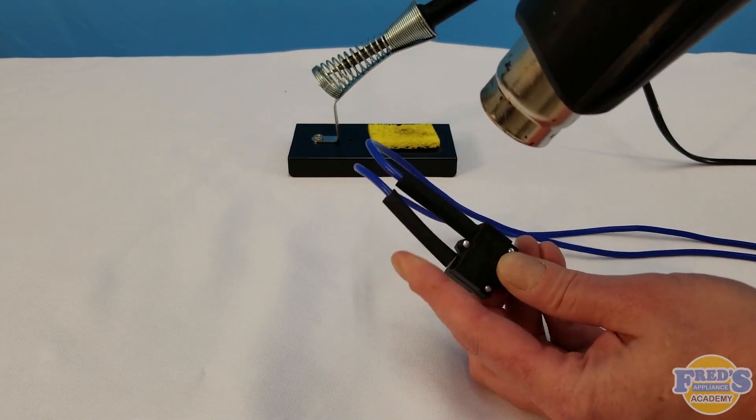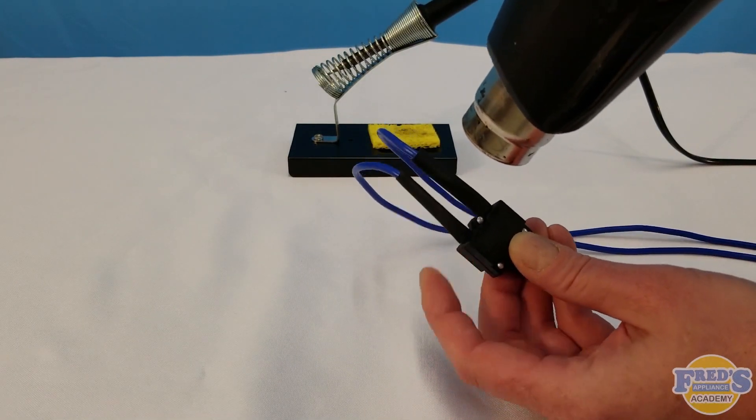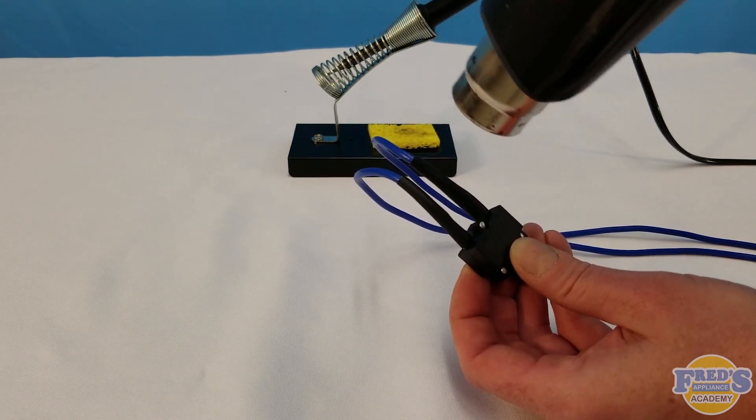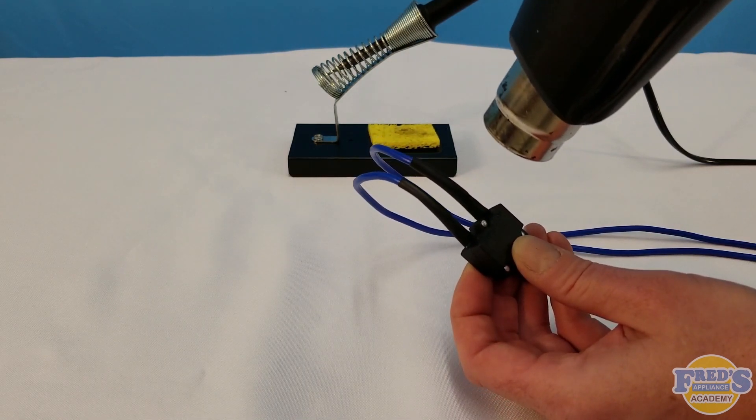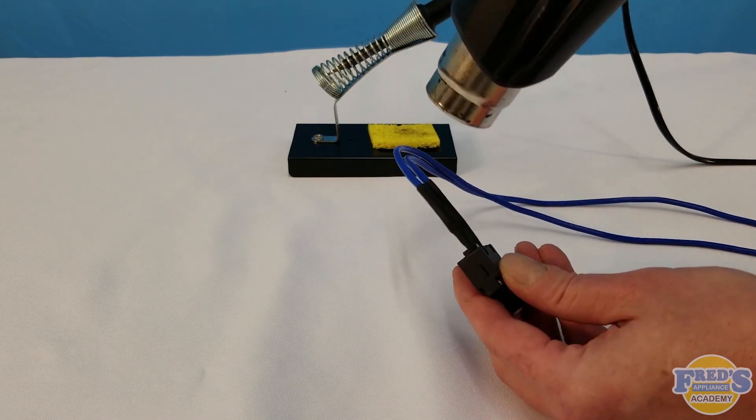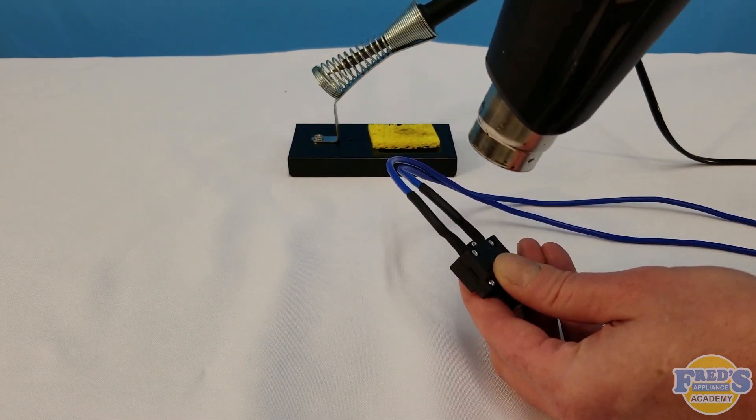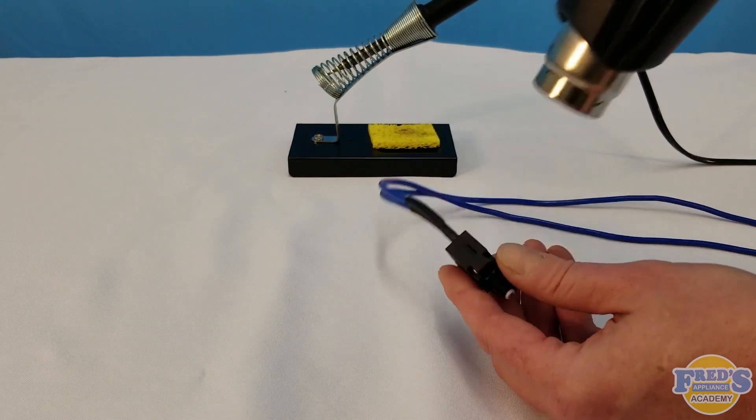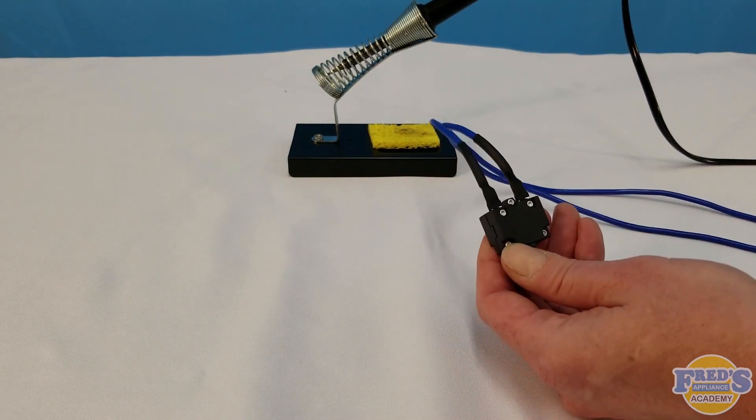Next we need a source of heat to shrink the tubing and my preferred method here is to actually use a heat gun which can be found at any hardware store. If you don't have a heat gun, a hair dryer most likely will do the trick. Worst case scenario, you can actually use a lighter. However, I don't prefer using a lighter because it leaves a little bit of soot behind.